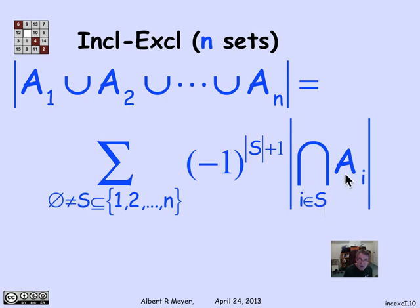That's what this rather concise but hairy formula looks like. We have an intersection over the Aᵢ, where i is specified by the set S of indices, and we sum these terms over every possible non-empty set S. That is the generalized form of inclusion-exclusion for n sets.